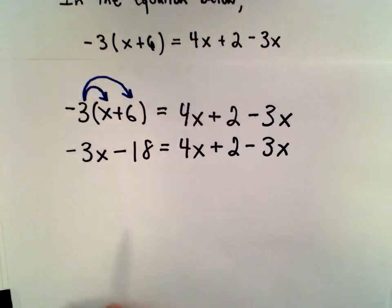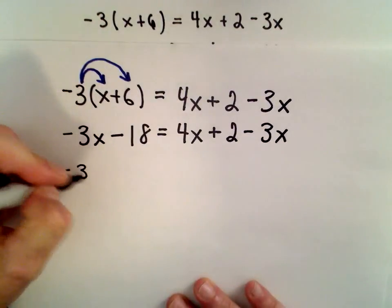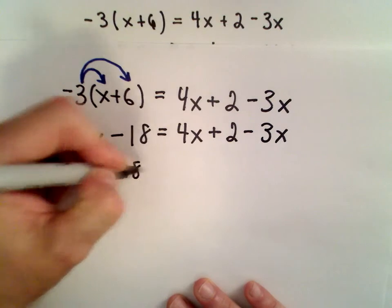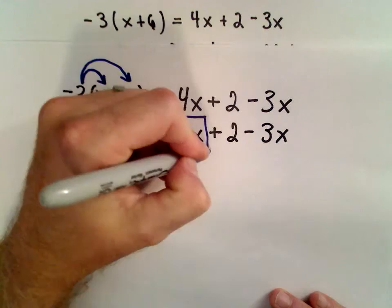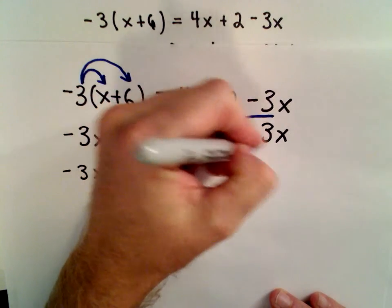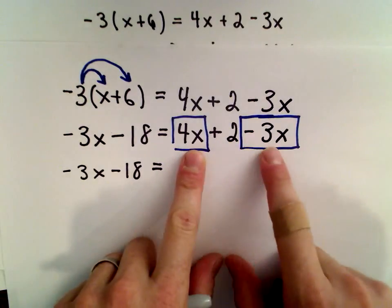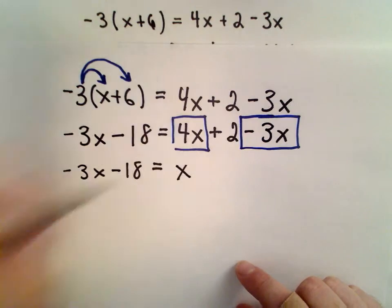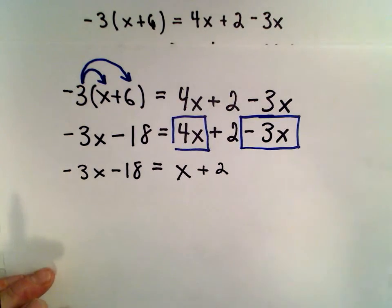On the right side, we do have like terms. We have this term involving x, a 4x, and we also have this negative 3x. If you think about combining that, 4x minus 3x, that's going to leave you with positive 1x, which we just write as x. And then we still have the plus 2 left over.